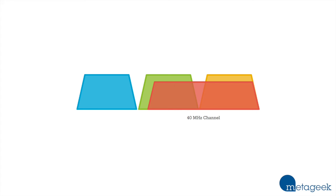In the 2.4 GHz band, you might also see a 40 MHz wide channel. It's basically an extra wide channel that allows us to move more traffic, kind of like a four-lane highway versus a two-lane highway. But the problem is that there just isn't enough room in the 2.4 GHz band to support a 40 MHz channel. In the 5 GHz band, 40 MHz channels work great.